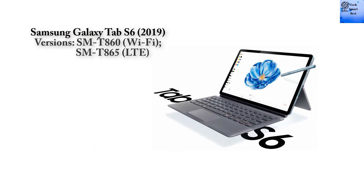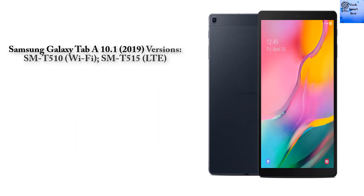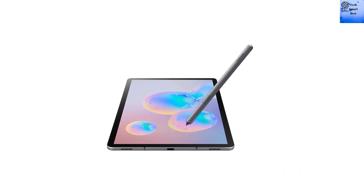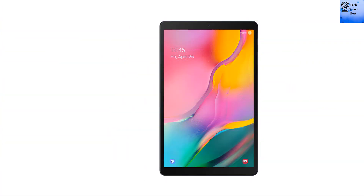Number 2: Version. Now I am telling about the version of both tabs. The Samsung Galaxy Tab S6 2019 version: SM-T860 and SM-T865 LTE. The Samsung Galaxy Tab A 10.1 2019 version: SM-T510 and SM-T515 LTE.